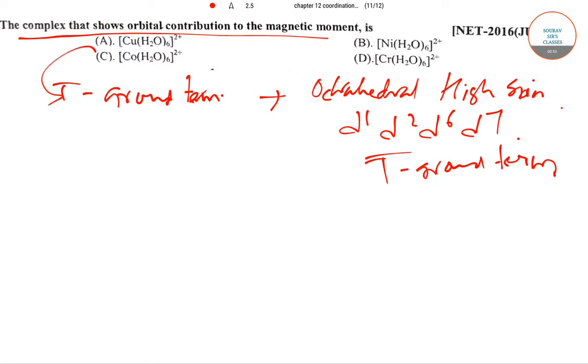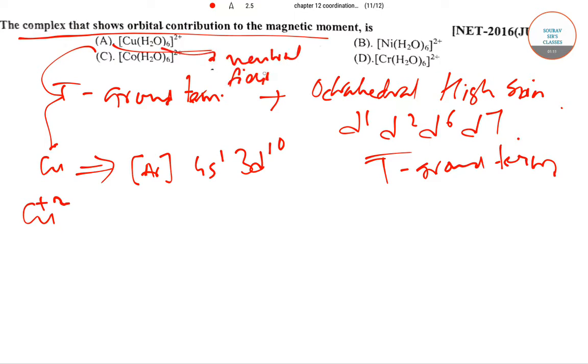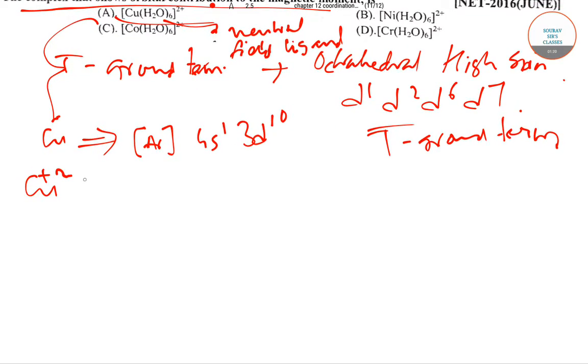So coming to the options here, taking option number A we have Cu. Cu is present as [Ar] 4s1 3d10. So Cu+2, here H2O is a neutral field ligand, so it will have no charge on it and it's a weak field. So Cu2+ will exist as [Ar] 4s0 3d9.